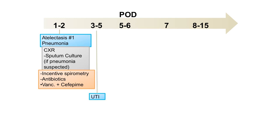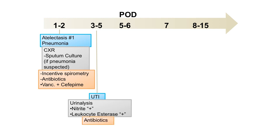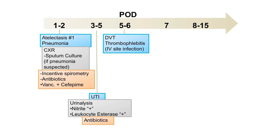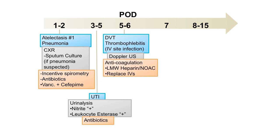Days 3 to 5, a urinary tract infection is most common. Do a urine analysis and consider starting antibiotics if there is leukocyte esterase with pyuria or white cells. The best way to prevent UTI on days 3 to 5 is to remove the Foley catheter earlier. Days 5 to 6 classically involves thrombophlebitis from an IV site infection or DVT — use Doppler ultrasound, low molecular weight heparin or a NOAC, and replace the IVs.